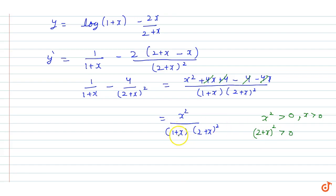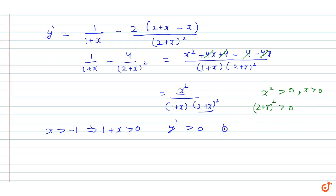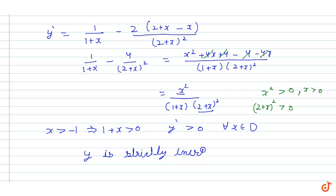Now the overall sign depends on (1 + x). If (1 + x) is greater than 0, then y dash is greater than 0. It is given that x is greater than minus 1, so (1 + x) is greater than 0. Since x square is positive and (2 + x) whole square is positive, y dash is always greater than 0 for x in its domain. Therefore, y is strictly increasing in its domain. This is our answer.